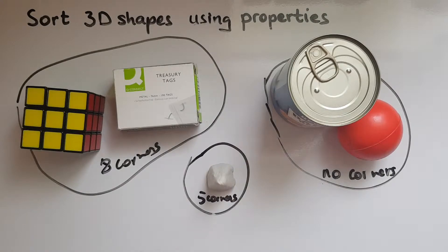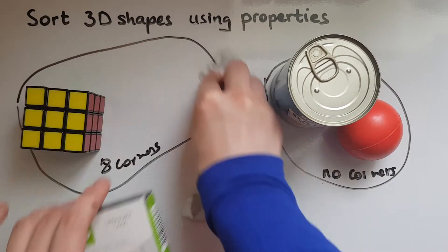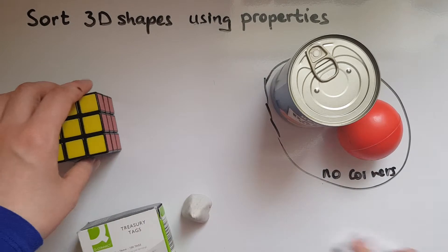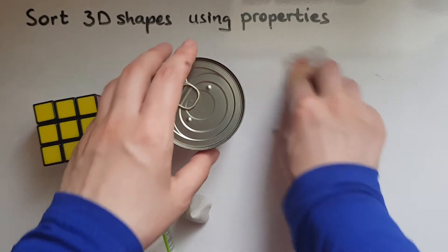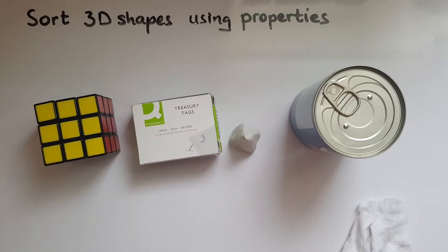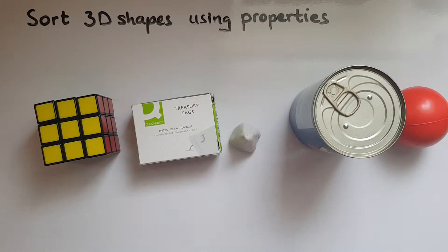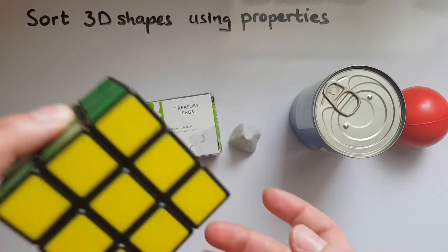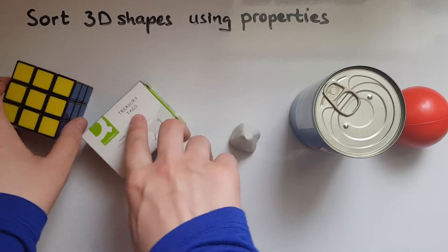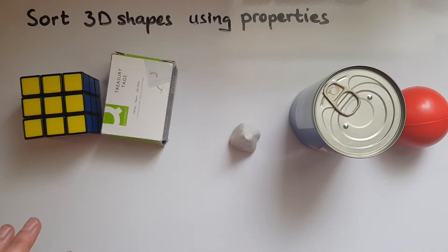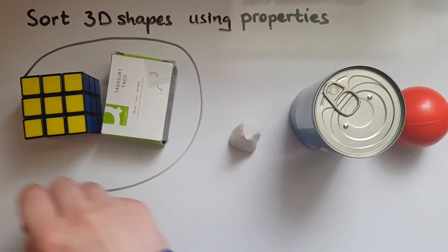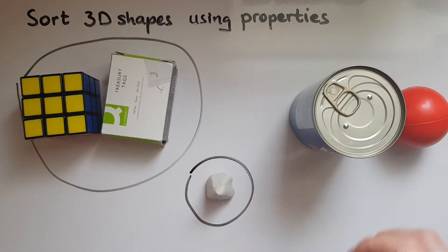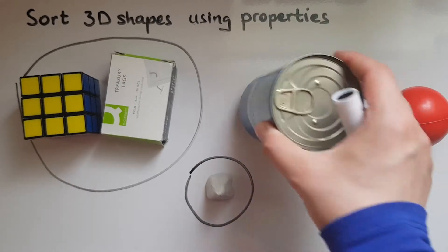So let's think of the number of faces maybe. In terms of the number of faces, we said there were 1, 2, 3, 4, 5, 6 faces in this one, and there were 6 faces in the rectangle as well. So these would be grouped together with 6 faces, and there were 5 faces in the square-based pyramid.